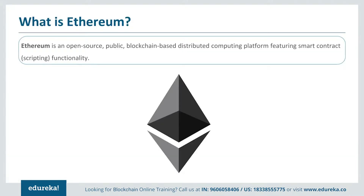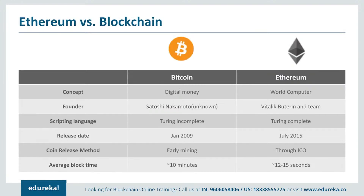Ethereum is actually an open source public distributed ledger system which is based on the original core blockchain idea itself. It also has a few additional features like smart contracts, which is basically an application. One of the most fundamental questions that should come to mind is: how is Ethereum different from Bitcoin blockchain? Let's look at some of the key differences here.